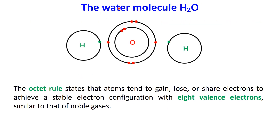Another example is the water molecule, H2O. Oxygen, the central atom, has a total of eight electrons — two in its first shell and six in its outermost shell. To become stable, oxygen needs two more electrons to satisfy the octet rule,